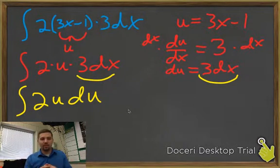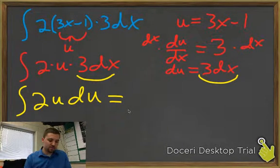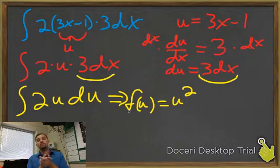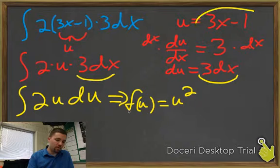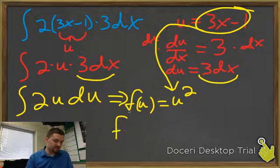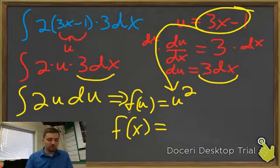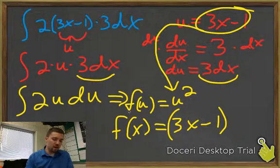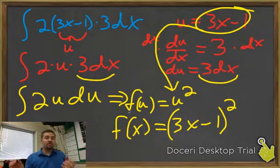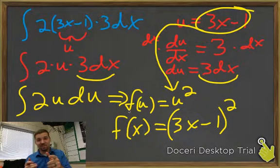I know I can take the antiderivative of 2u — that's u squared. So f of u is just u squared. But remember, we started off in x's, so we better put everything back in x. Since u is 3x minus 1, we substitute back in: f of x is (3x minus 1) squared. And I hope that's what we ended up with when we reasoned our way through it. Now you might ask why we need this if we can just reason through it — stay tuned for the next example.